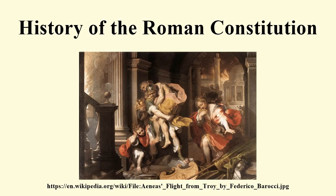Throughout the history of the Republic, the constitutional evolution was driven by the struggle between the aristocracy and the ordinary citizens. Approximately two centuries after the founding of the Republic, the plebeians attained, in theory at least, equality with the patricians. In practice, however, the plight of the average plebeian remained unchanged. This set the stage for the civil wars of the 1st century BC, and Rome's transformation into a formal empire.